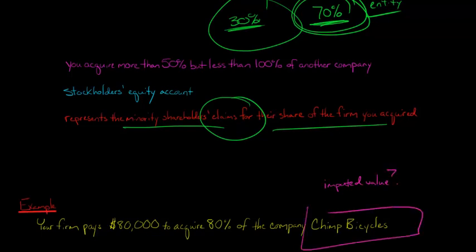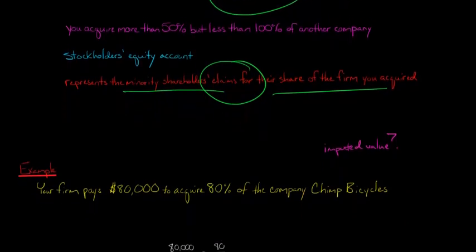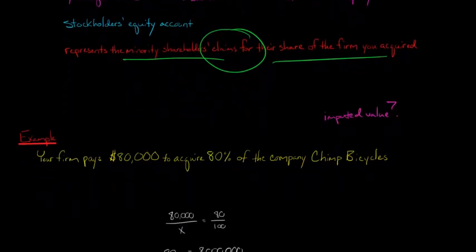If you paid $80,000 for 80%, we can set up an equation. We've got 80 over 100, that represents 0.8 or 80%. So 80 over 100 is equivalent to 80,000 over X.